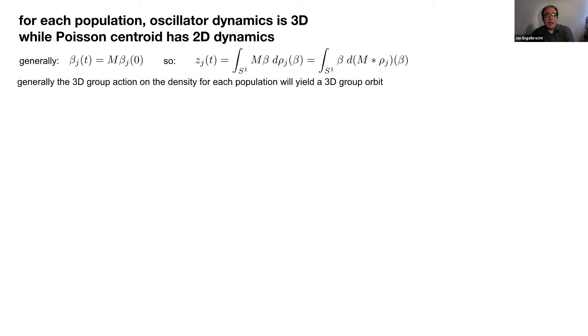Generally, if you take the constituent oscillators and advance them with a Mobius group operator, which is three dimensional, you can construct the dynamics of the centroid by simply this first integral. Through a coordinate transformation, you can interpret this as the group action on the density or the measure itself. So generally, if M is an element of a 3D group, the action of the group on the density would give a three-dimensional group orbit of density space. But the Poisson densities are actually quite special. The 3D group action on a Poisson density actually gives a two-dimensional group orbit.